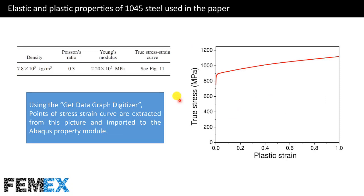The mechanical properties include density, Poisson's ratio, Young's modulus, and the true stress versus plastic strain curve. Using the data graph digitizer, points of the stress-strain curve are extracted from this picture and imported to the Abacus property module.